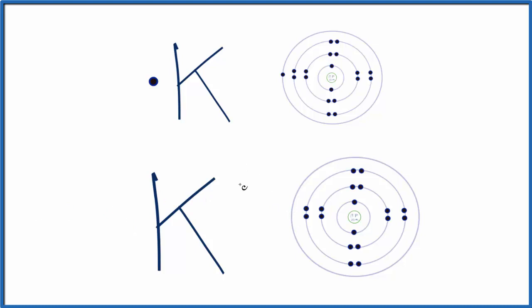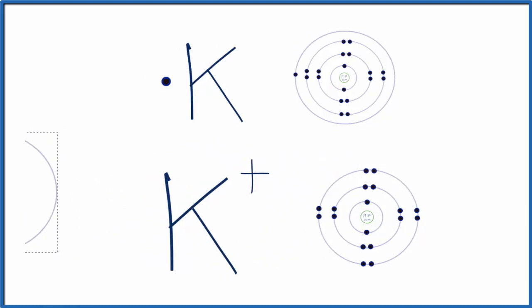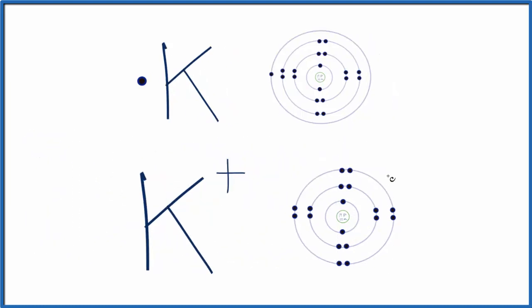That makes it the potassium ion, K+, and we might as well remove this outer shell, because there's nothing in it at this point. So right now, this K+ is a good representation for the Lewis structure for the potassium ion.